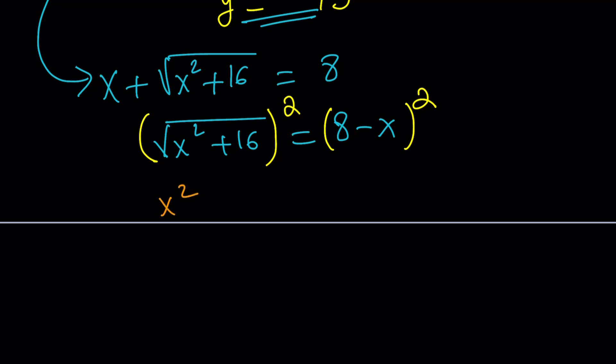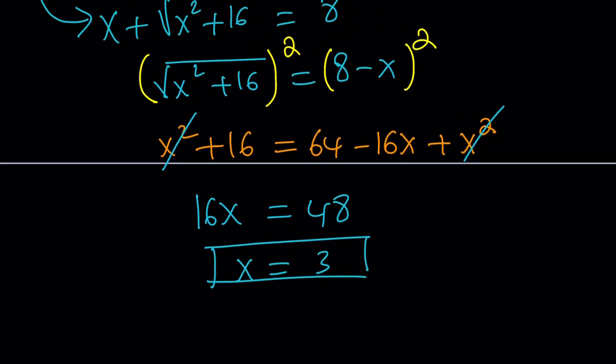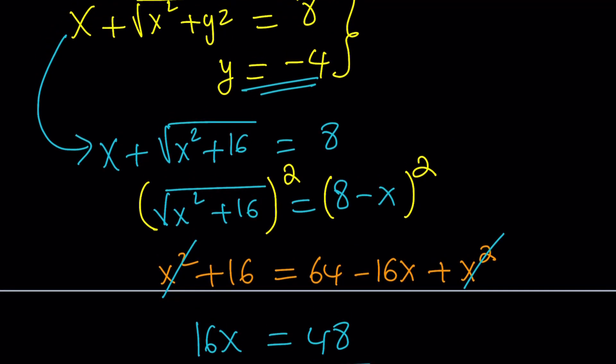I'm going to square the left-hand side, so it's going to get rid of the square root. And, the right-hand side is like 8 minus X squared, which is 64 minus 16X plus X squared. The nice thing about this, X squared cancels out. Awesome. So, this is no longer quadratic. It is linear. So, let's put the negative 16X on the left to make it positive. And, let's subtract 16 from 64. That gives me 48. And, yes, X equals 3 is the right answer.